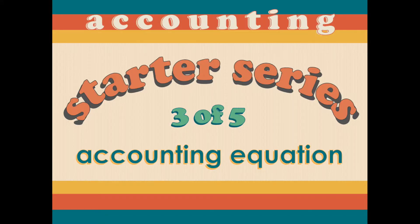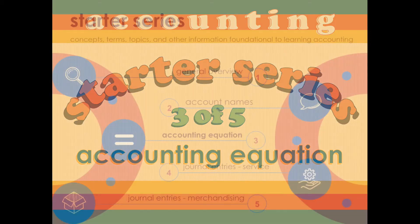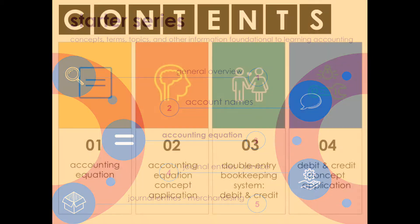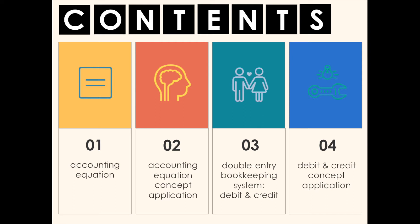Hey everyone, welcome to the third episode of the Accounting Starter Series. In this episode we will be talking about the accounting equation — Assets equals Liabilities plus Equity. We will also be applying the lessons we've learned in the previous episodes to analyze transactions. We'll start off by discussing the accounting equation, then apply the concept on some sample problems, and after that we'll talk about the double entry bookkeeping system, debits and credits, then apply these concepts on some sample problems as well.